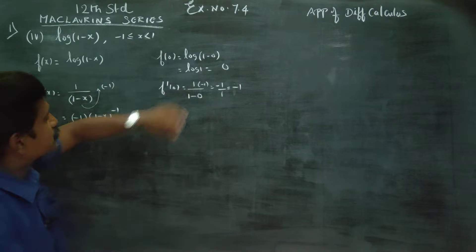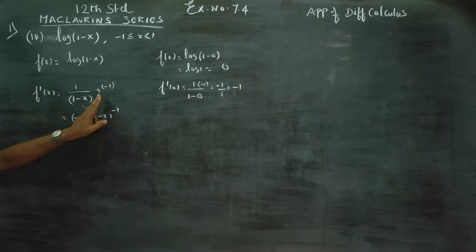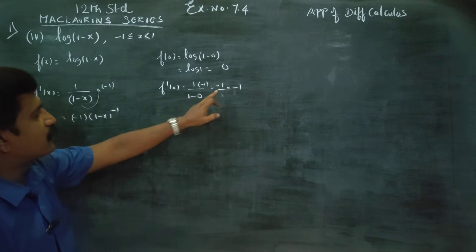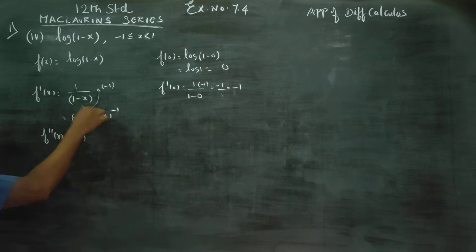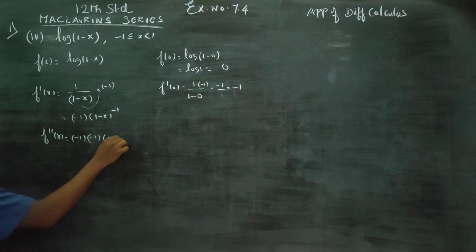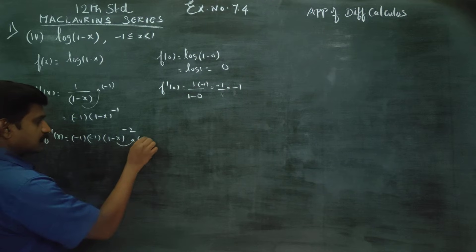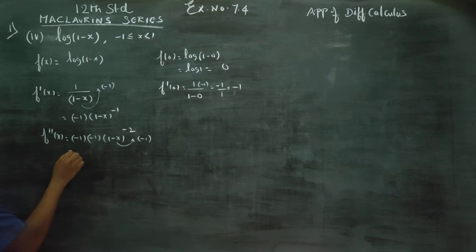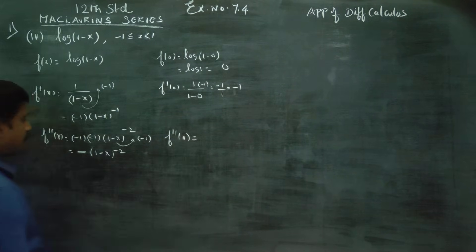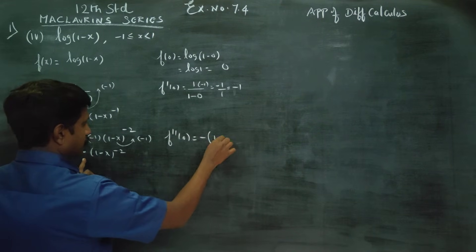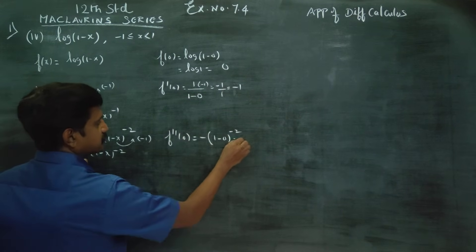F'(x) is differentiated by chain rule. To find f''(x), differentiate minus 1 times (1 minus x) to the power minus 1. Bringing down minus 1 and applying chain rule, you get minus 1 times minus 1 times (1 minus x) to the power minus 2, times minus 1, giving negative (1 minus x) to the power minus 2. So f''(0) equals minus 1.